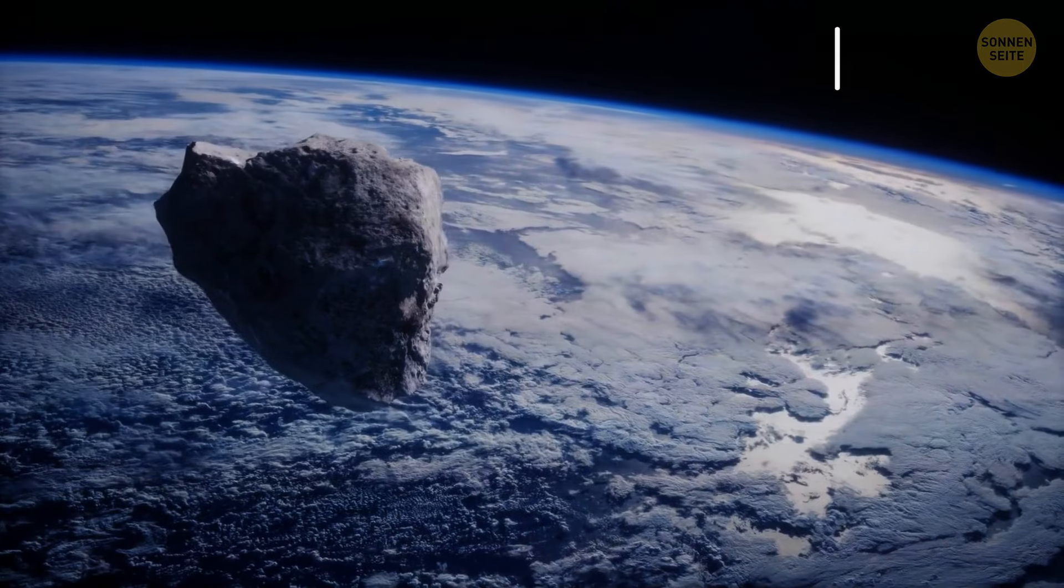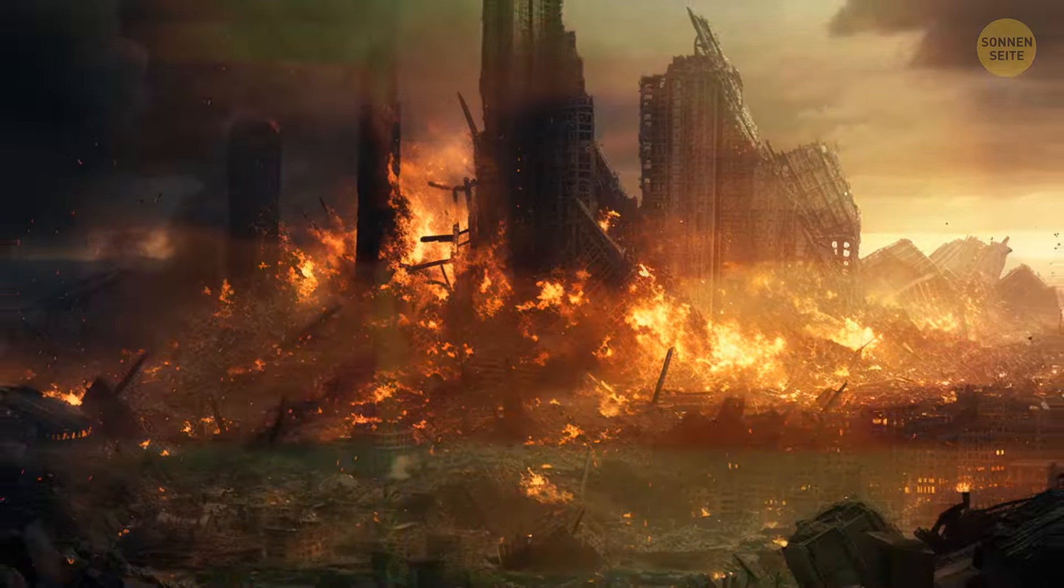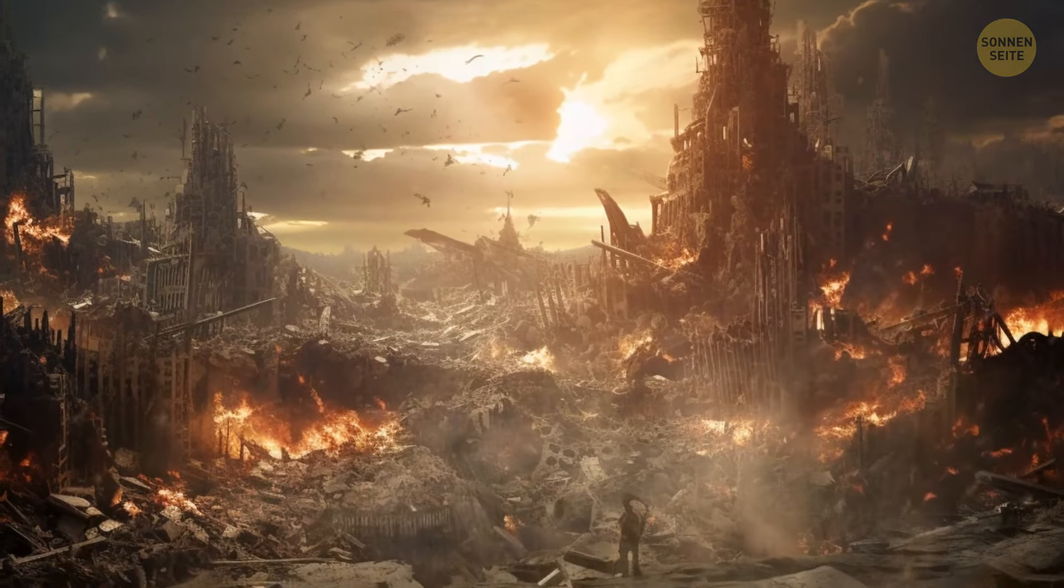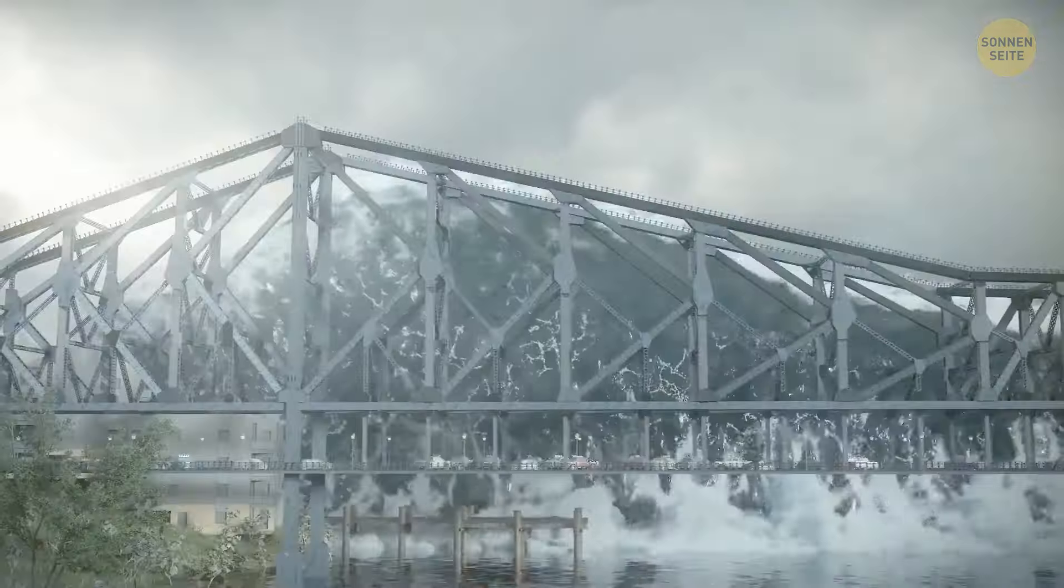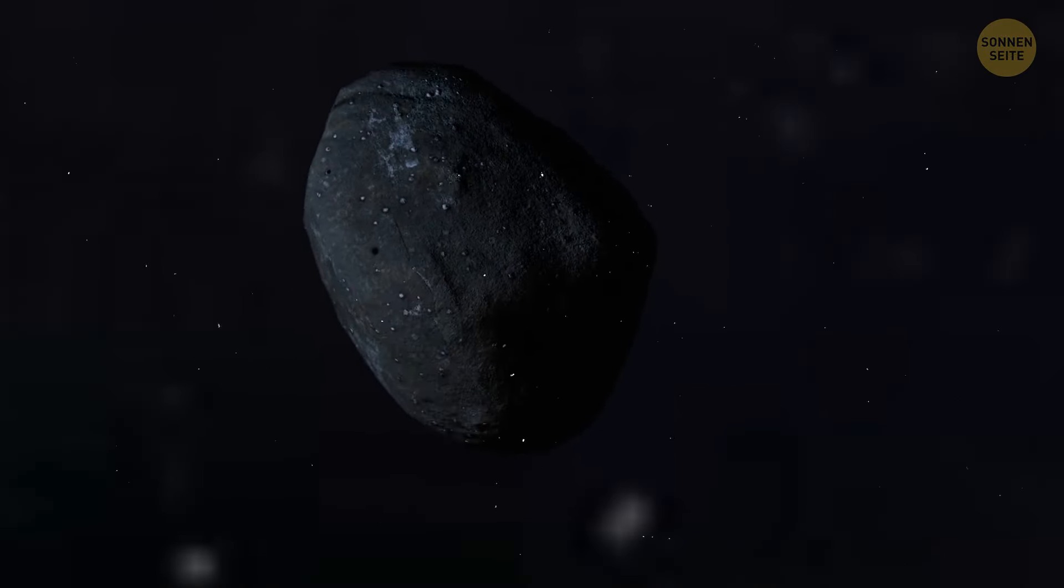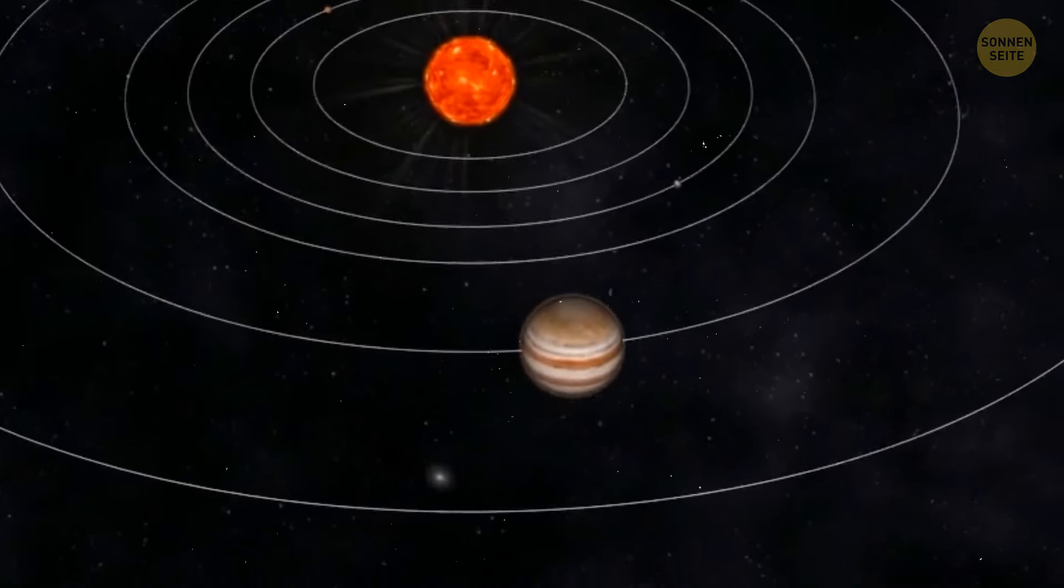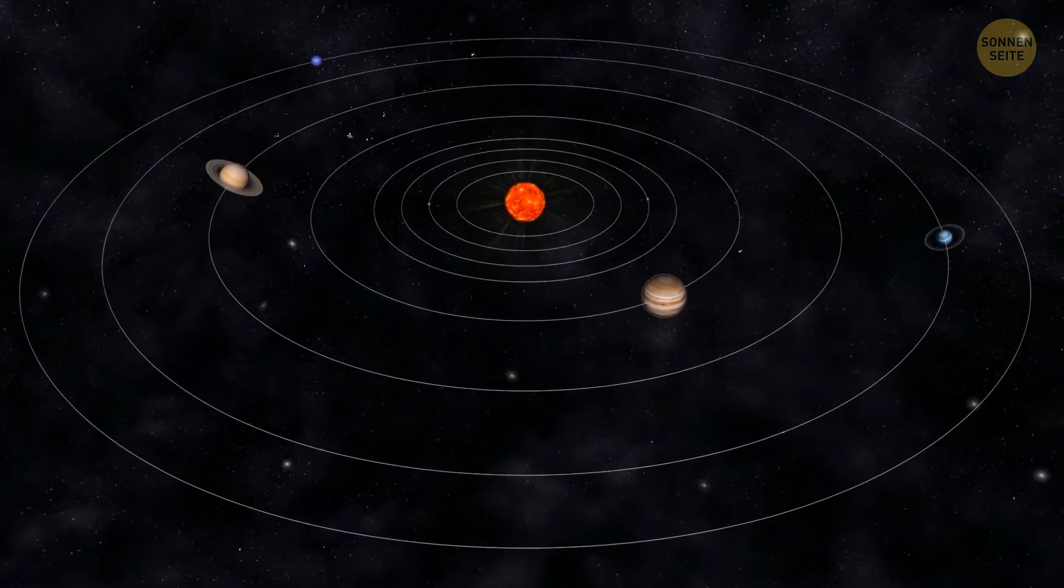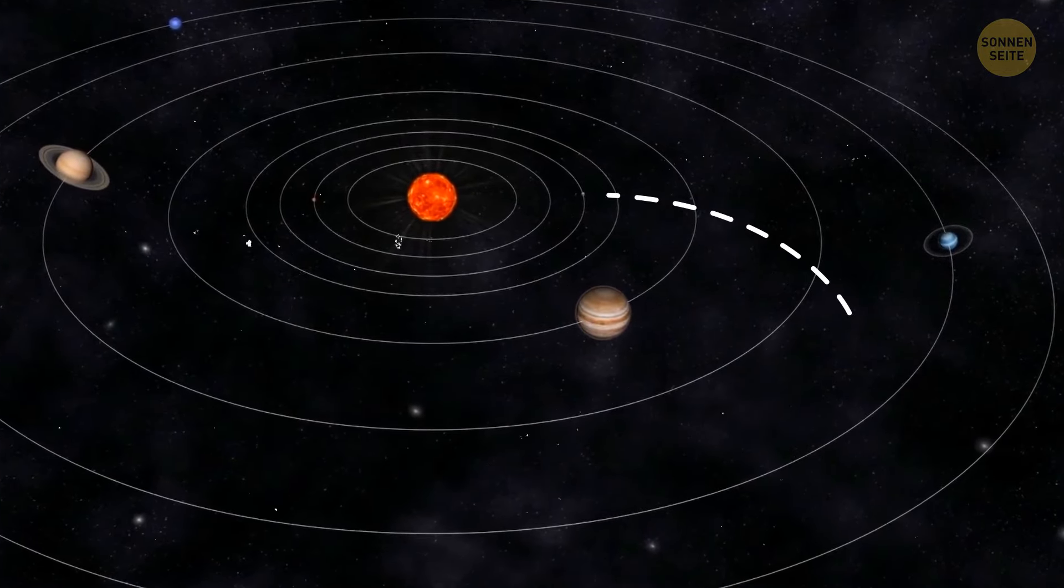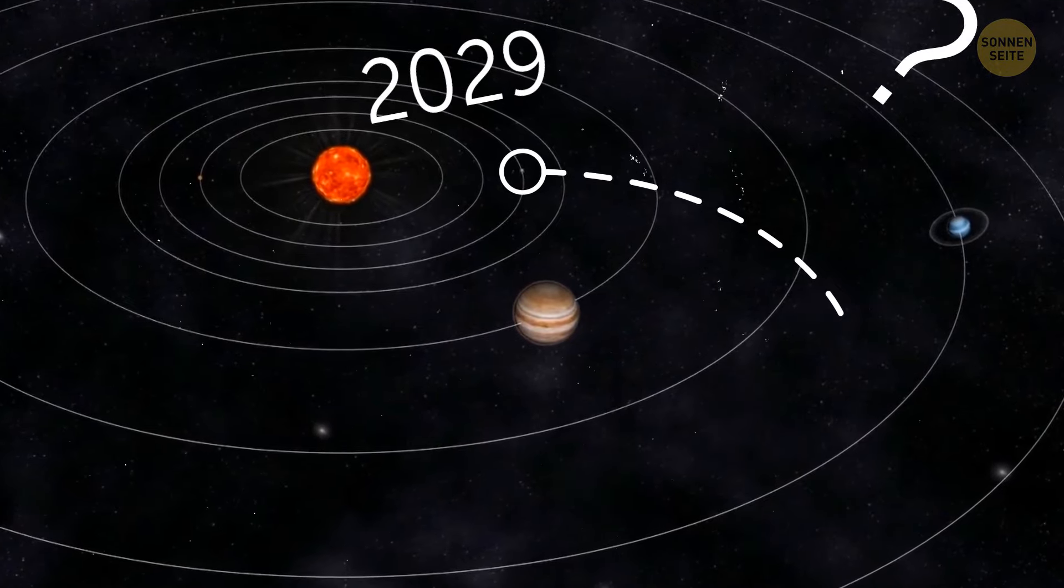If an asteroid like Apophis hits Earth, we will be destroyed. Massive earthquakes will strike, and tsunamis will flood everything. Apophis is a billion-year-old celestial body that has been in the solar system since its inception. So you might be thinking, how likely is it that this giant space stone will collide with our planet in 2029? Well, let's find out, shall we?